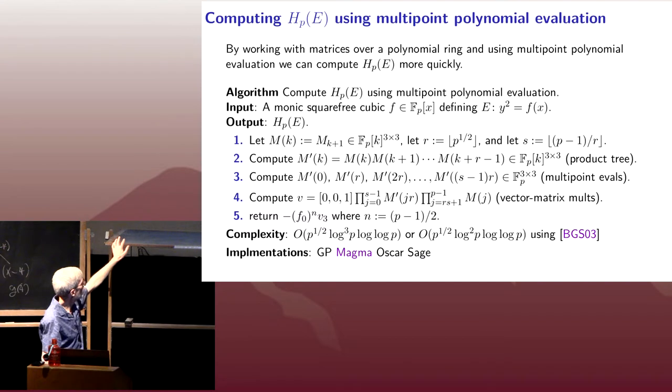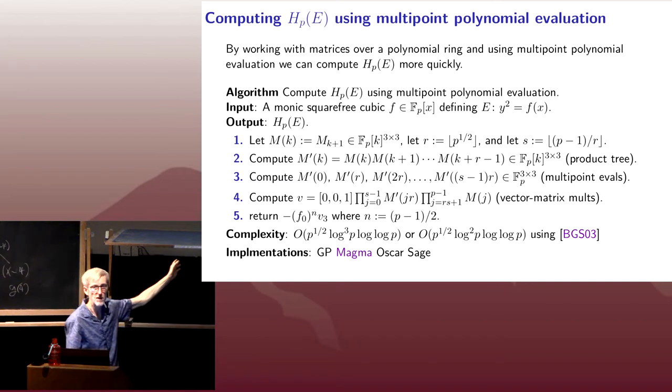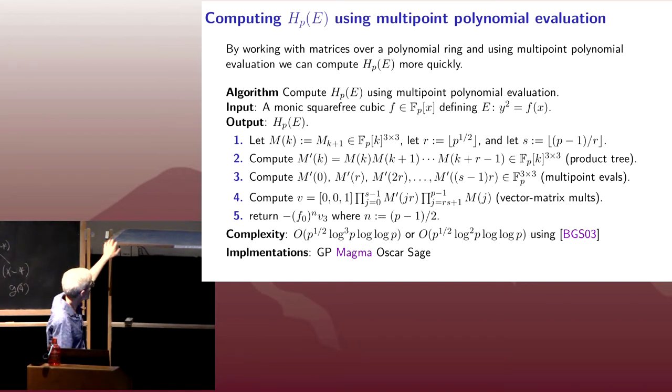And we want to multiply our vector v times all of those matrices plus any we missed because r times s was smaller than p minus 1.